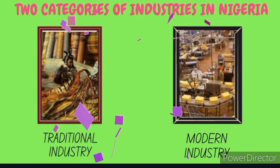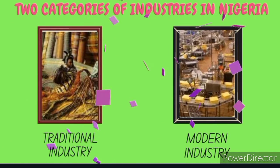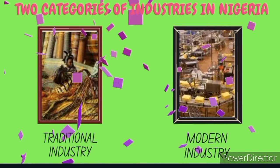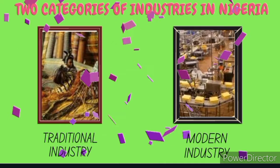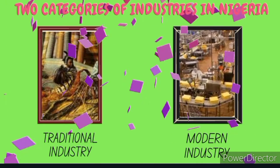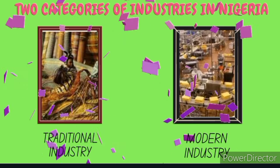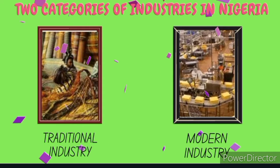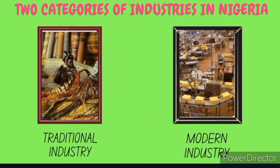The categories of industries in Nigeria — industries in Nigeria can be classified into two categories based on what they produce and on the nature of the operation. The two categories we have in Nigeria are traditional industries and modern industries.